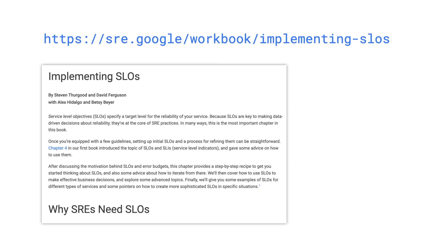I really like that book because it contains practical examples from Google and Google customers, like Evernote, the Home Depot, the New York Times, and others. In that book, you can read about what worked for them and what didn't. I prefer to learn from their mistakes instead of making my own. I'll drop the link to the book in the video description below.